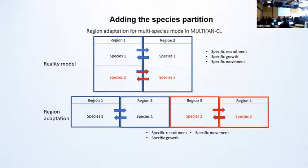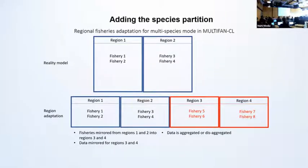What one can do is represent this reality by duplicating the regions and assigning one of the species to each. This is what we call the region partition. So in these two regions you have species one; you duplicate those regions and have regions three and four for species two. The dynamics for each species are performed in their respective region as if they were operating in the same region — for example, the movement occurring between the regions, but with the movement parameters being specific to each species. Similarly, the fisheries in the reality model are replicated in the additional regions — these are what we call mirrored fisheries. The core fisheries data, such as fishing incidents and importantly effort, are duplicated in the mirrored fisheries, but the catch and size composition data can be disaggregated or aggregated among the two species.